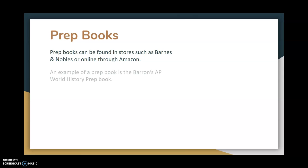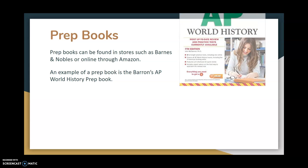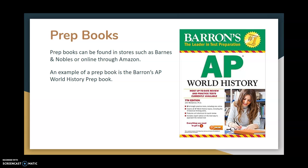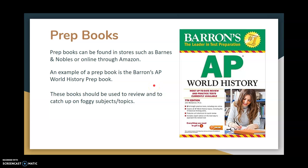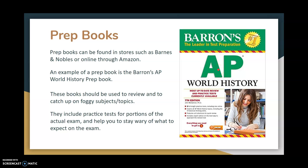Prep books are really helpful and can be found in stores like Barnes & Noble or through Amazon. An example is Barron's AP World History prep book — it has three full-length practice tests including one online, and it covers the topics you need. It gives you practice tests, tips, and is a great resource to review before the test in the spring. However, don't rely solely on this book to study; it prepares you for taking the test rather than teaching you exactly what's on it.